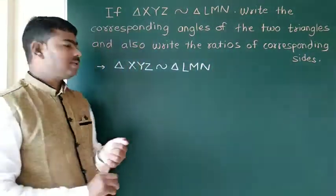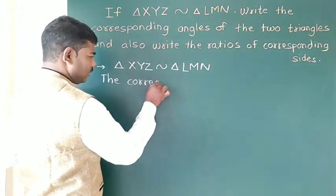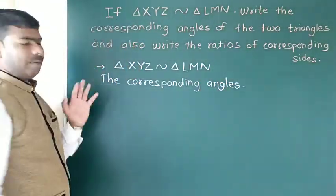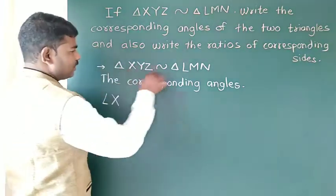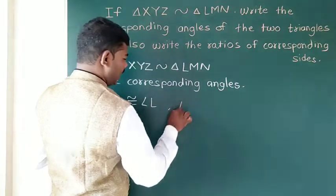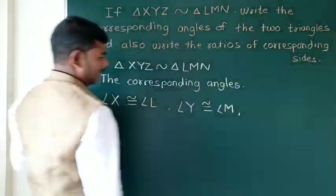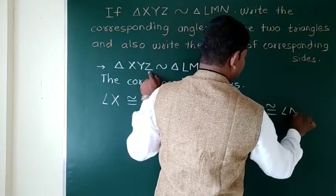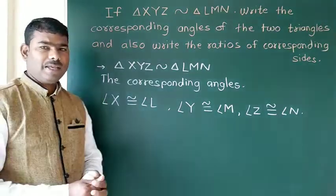For these two similar triangles, the corresponding angles are: angle X is congruent to angle L, angle Y is congruent to angle M, and angle Z is congruent to angle N. If two triangles are similar, corresponding angles are congruent.